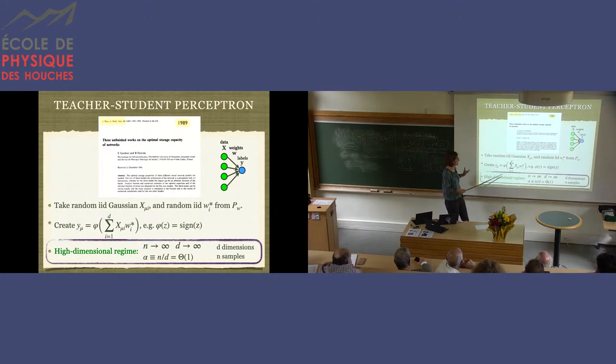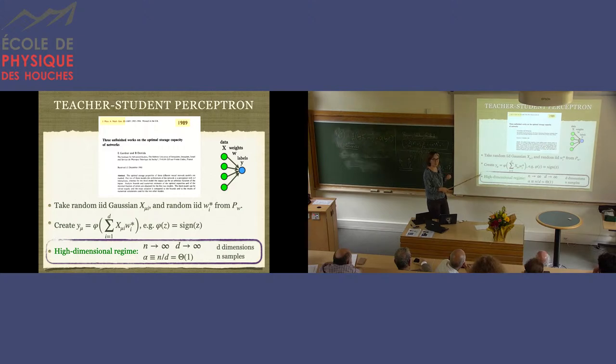Where they actually set this teacher-student perceptron in the simplest possible case, when these hidden layers are not there. There is only the input and the output. And again, they create the labels by scalar products of the input data and some ground true vector that the teacher is using. Non-linearity you can think of a sign, for instance, here. They take a limit which, in this setting is the natural thermodynamic limit, where it is dimension d and the number of samples are both big and the ratio is of order 1. That's when somehow interesting things happen.